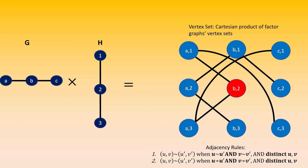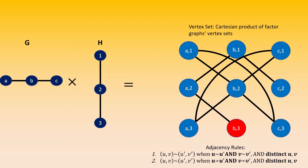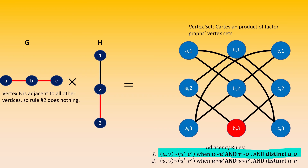On to B2. The first rule says that B2 will be adjacent to A1, A3, C1, and C3, as A and C are adjacent to B, and 1 and 3 are adjacent to 2. However, as with B1, there are no adjacencies produced by the second rule for vertex B2. On to vertex B3. By the first rule, B3 is adjacent to A2 and C2, as A and C are adjacent to B, and 2 is adjacent to 3. Again, the second rule will not produce any adjacencies for B3, because vertex B is adjacent to every vertex in graph G.